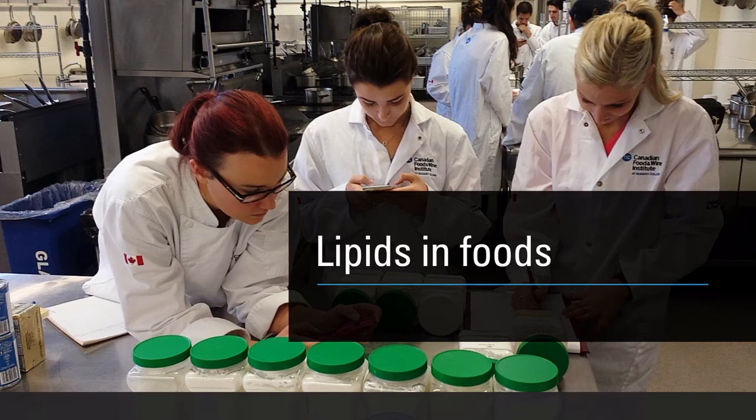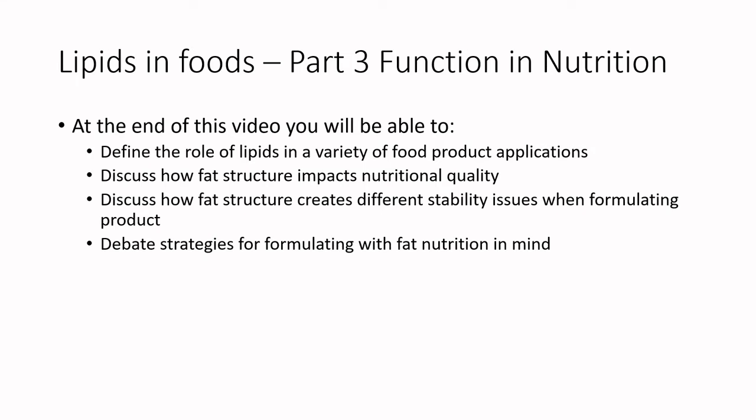We're back again — this is Lipids in Foods, part three, understanding the function with relationship to nutrition. We talked in the previous slideshow about structure relating to applications in food product development. Fat has dominated a lot of our nutrition perspectives in terms of product formulation, and there's a lot of complexity, so we'll get a separate slideshow just about this. By the end of this video, we'll define the role of lipids in food product applications, discuss how fat structure impacts nutritional quality and stability, and debate different strategies for formulating with fat nutrition in mind.